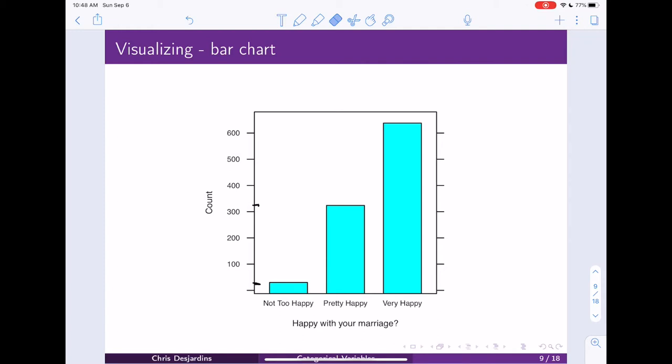So hopefully, by looking at this chart, you're able to see, wow, most people look like they're happy in their marriage. The overwhelming majority of people are either pretty happy or very happy. And we can see that most people are very happy. And then there's only very few people that are unhappy in their marriage.